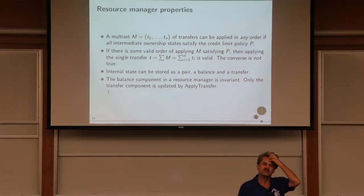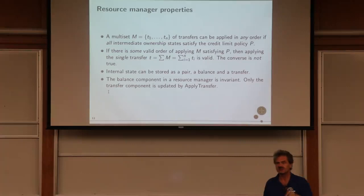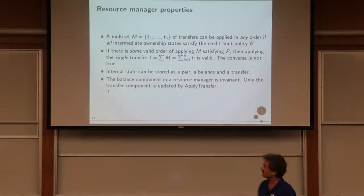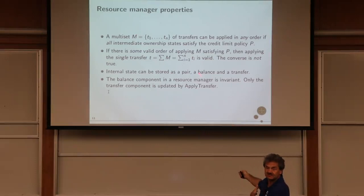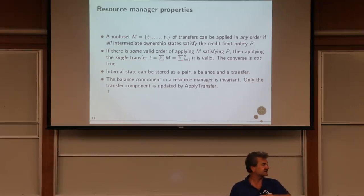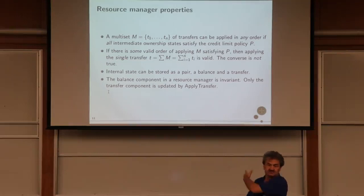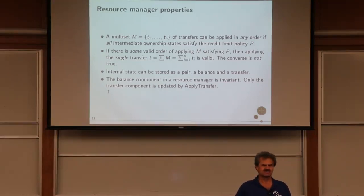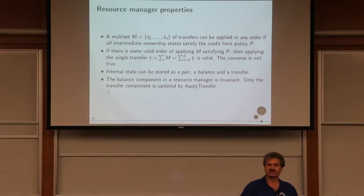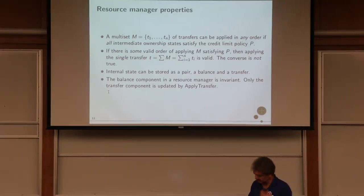You might lose provenance information through netting, but you can maintain the multi-set M alongside the netted transfer T and keep the syntax tree of how T was computed if needed. The resource manager's function depends only on the result T, not how it was computed — but you can retain provenance if desired.